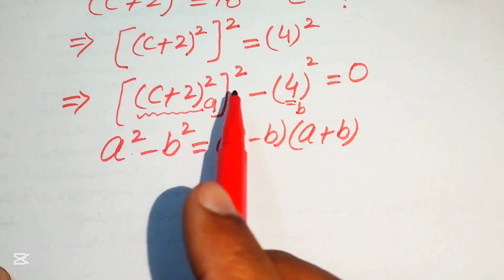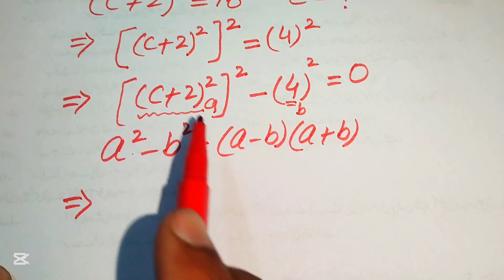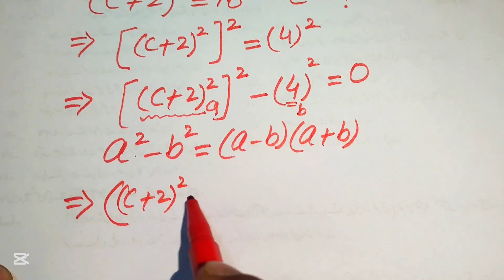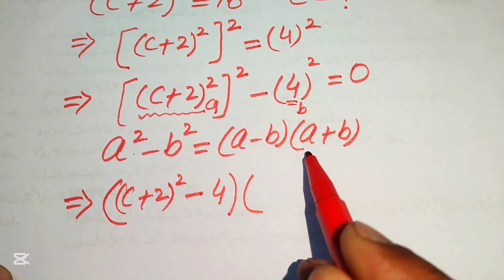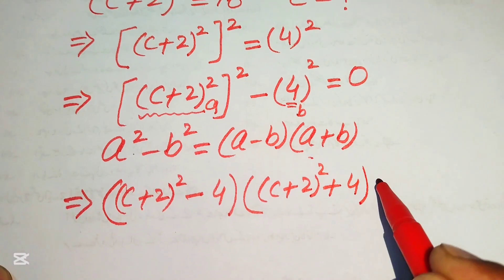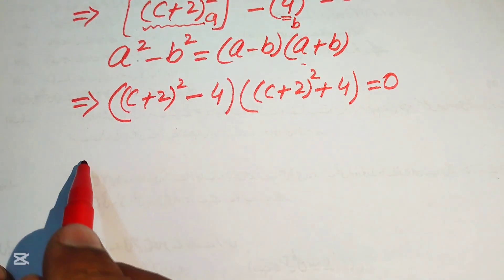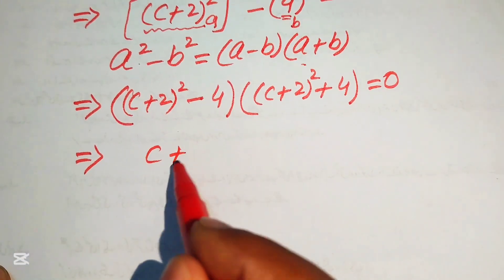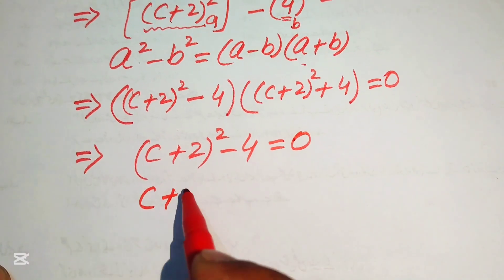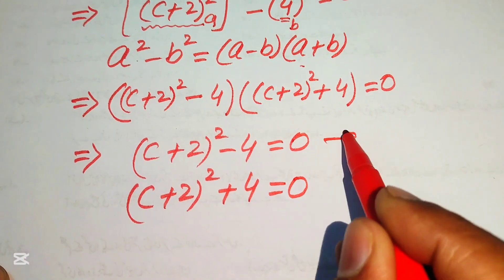Substituting into the difference of squares formula, we write the equation as ((C + 2)² - 4)((C + 2)² + 4) = 0. This gives us two cases: equation 1 is (C + 2)² - 4 = 0, and equation 2 is (C + 2)² + 4 = 0.